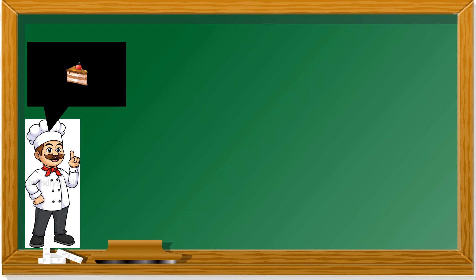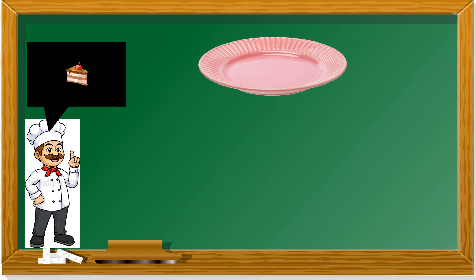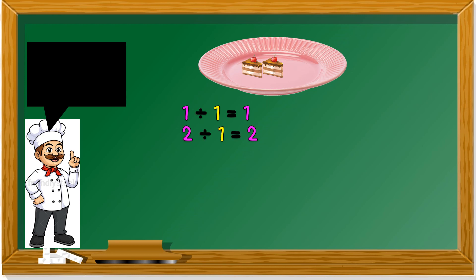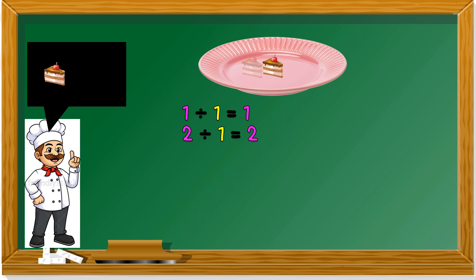We have looked at multiplication. Now let us take a look at division. I have a cake and I have a plate, so a cake divided into one plate: 1 divided by 1 equals 1. I have two cakes and one plate — I put them all into one plate: 2 divided by 1, we get 2. What if I have three cakes and a plate? I can only divide into one plate: 3 divided by 1 equals 3.